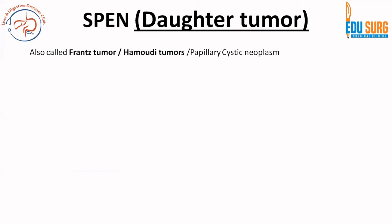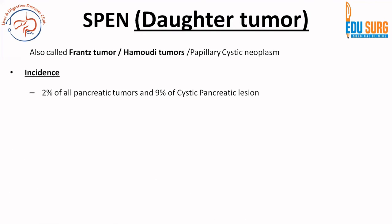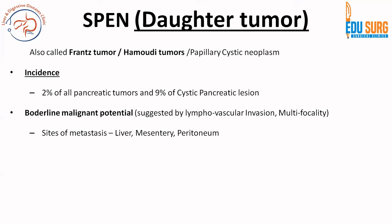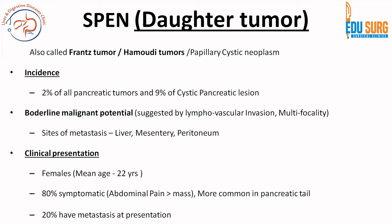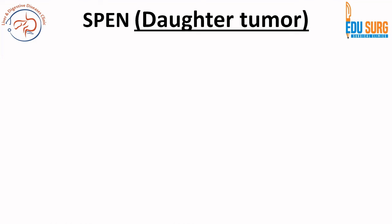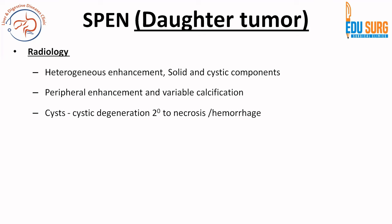Now moving to SPEN, also called the daughter tumor. Remember that serous cystic neoplasm was the grandmother tumor. SPEN is the daughter tumor and is also known as the FRANCE tumor, HAMAUDI tumor, or papillary cystic neoplasm. It has borderline malignant potential, suggested by lymphovascular invasion and multifocality. It can have metastasis, most commonly to the liver, mesentery, and peritoneum. It is called daughter tumor because it is very common in females in the second decade. 80% are symptomatic and the most common symptom is abdominal pain. It is more common in the pancreatic tail. 20% have metastasis at presentation. Imaging shows a mixed solid-cystic lesion with peripheral enhancement and variable calcification.